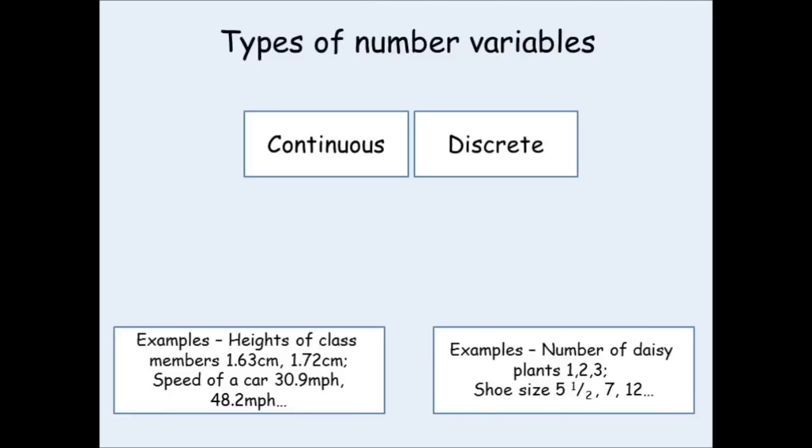Continuous and discrete variables are both when your independent variable is represented with numbers. A continuous variable is when it can be any number. Examples could be height, speed, it could be mass. Any of these variables can go to lots and lots of decimal points. It could have any value.